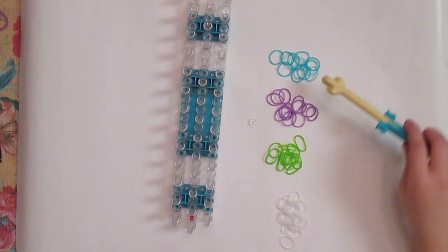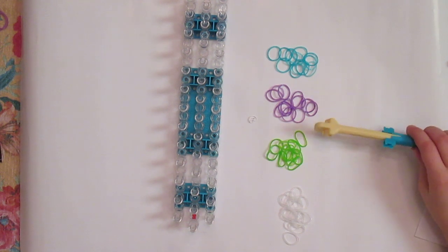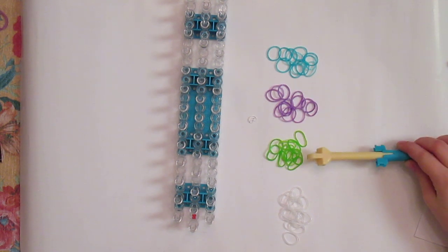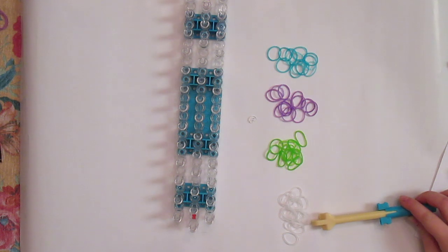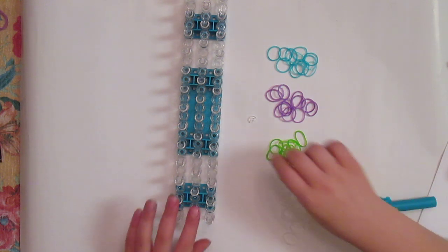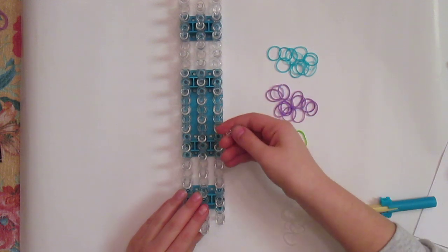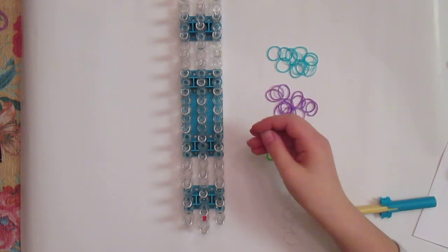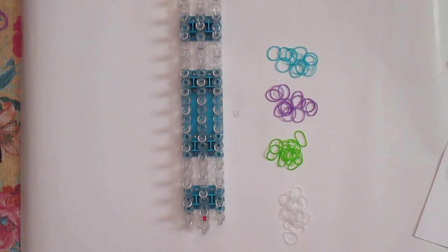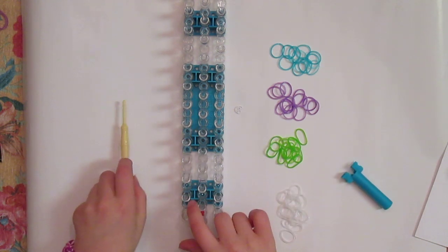I'll be using 12 teal, 12 purple, 12 green, and maybe a little bit more than 12 clear. You will need a C-clip or if you don't have C-clips an S-clip. You will be needing your rainbow loom hook and your loom.